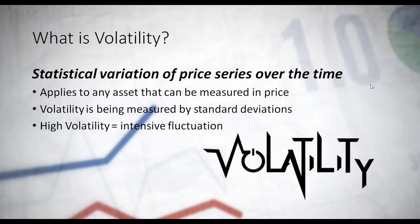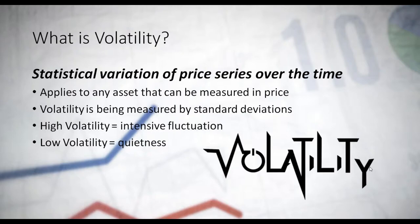High volatility equals intensive fluctuations in the asset, while low volatility equals quietness of the market. When volatility is high on a trading chart, price opens at a certain level and closes relatively far from that level, creating big bars. These bars can be bearish or bullish — that doesn't matter for volatility, because volatility measures the intensiveness of price action, visualized on your chart by the candles.